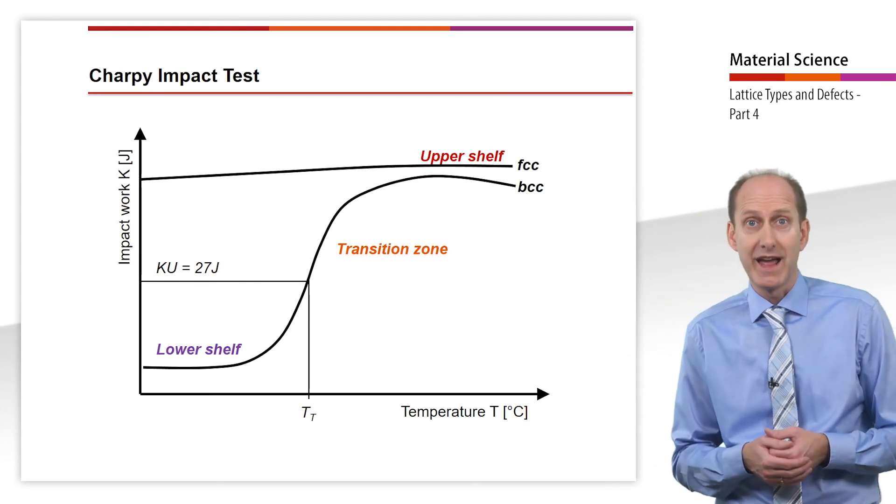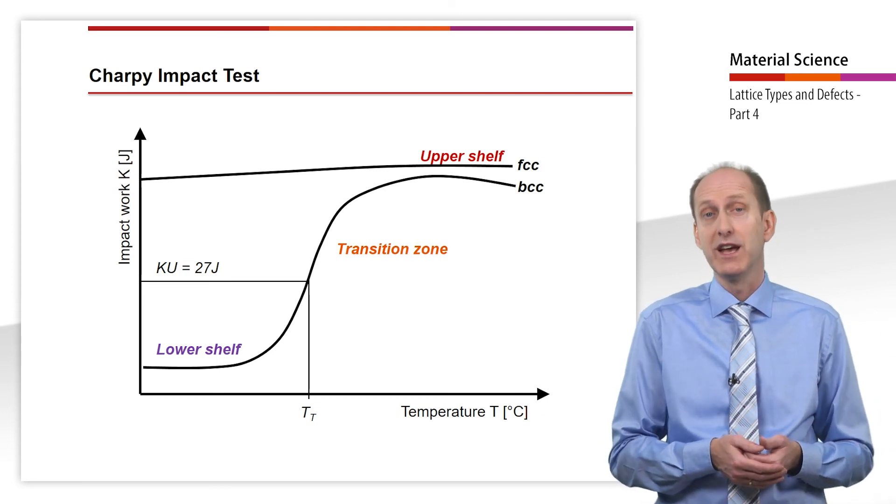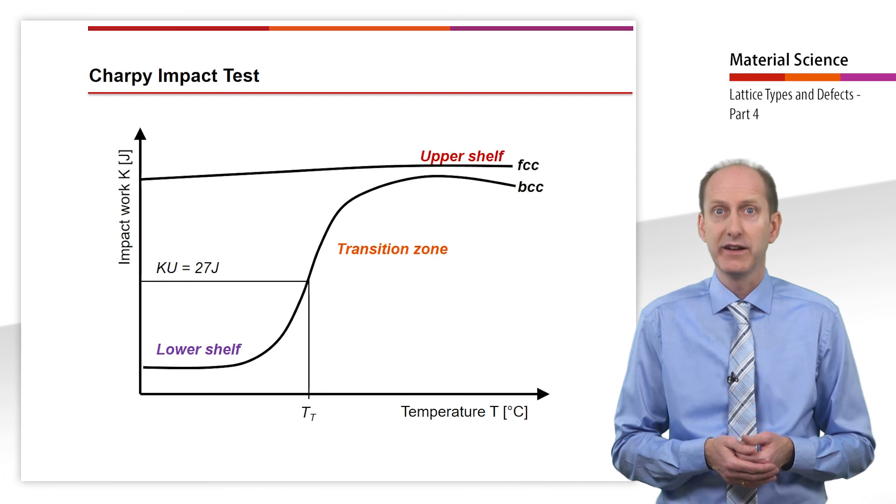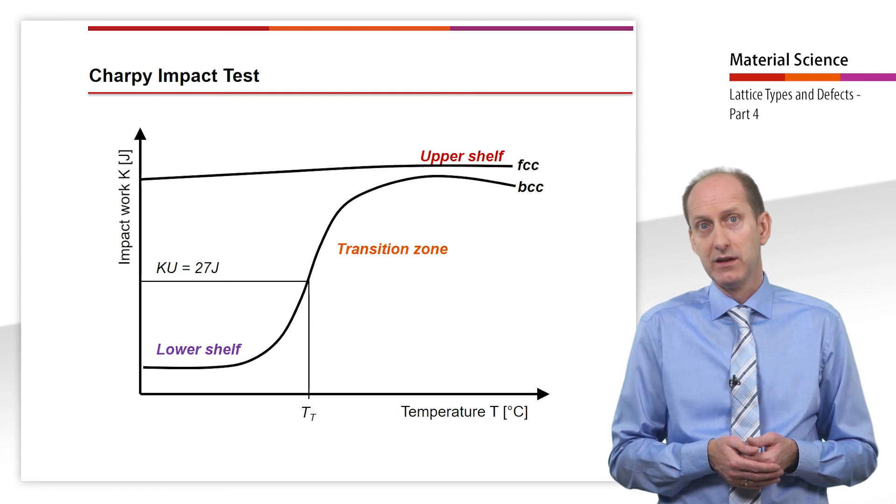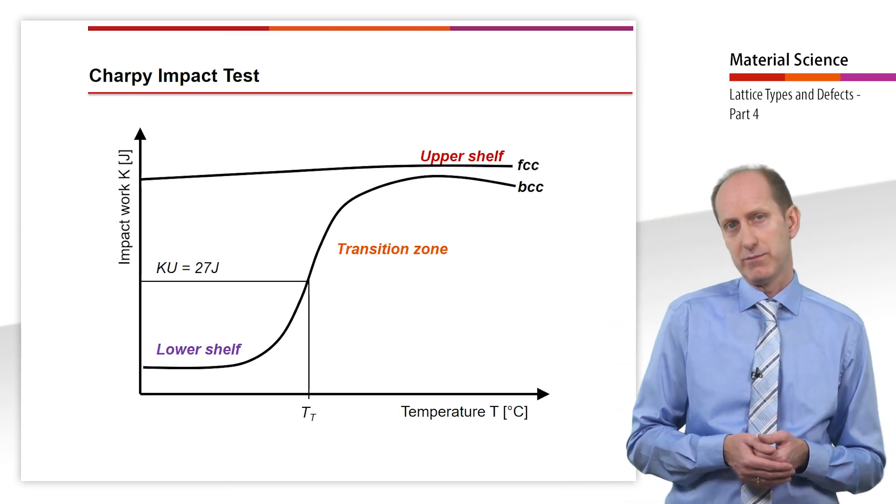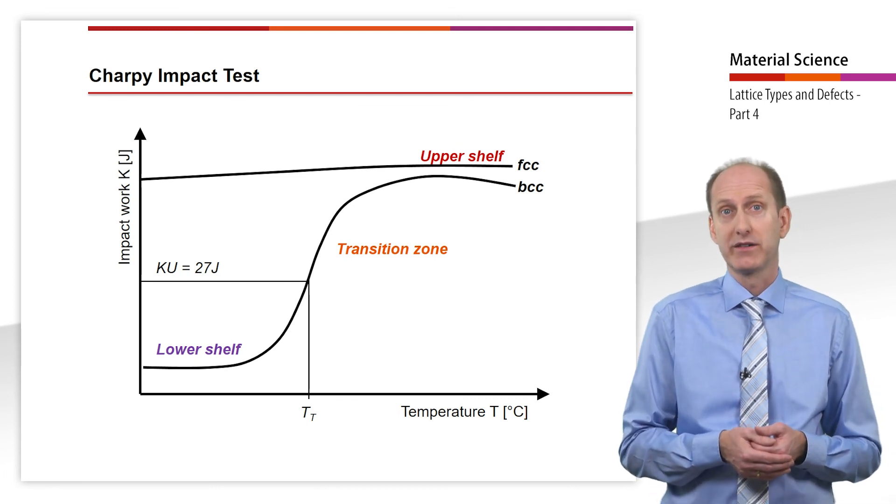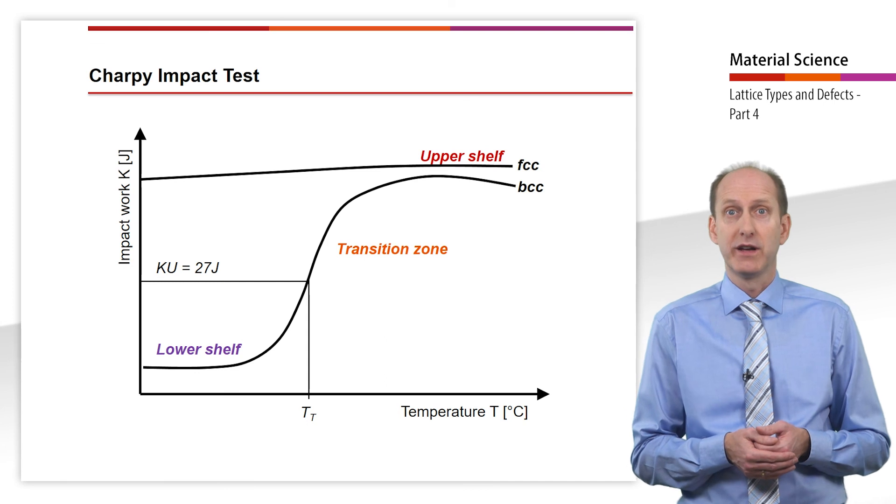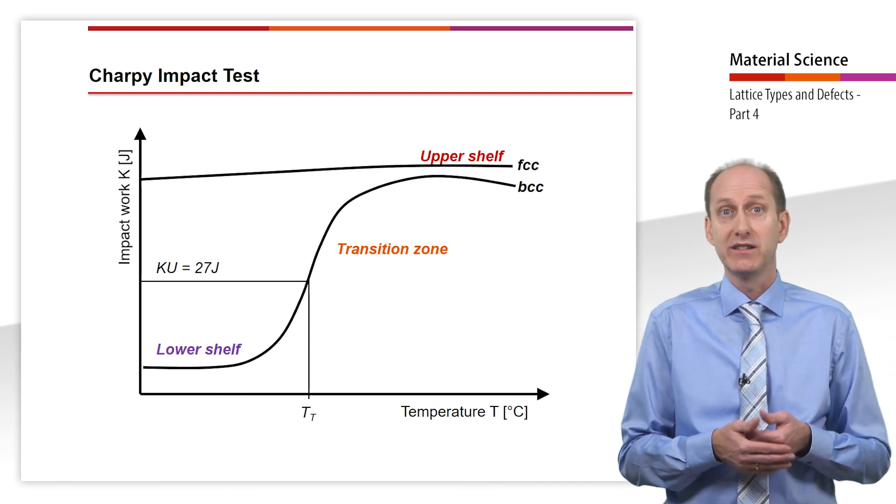As you have learned in the last video, the difference between face-centered cubic metals and body-centered cubic metals exhibits itself especially in temperature-dependent impact stress. The resistance to slip increases sharply with decreasing temperature, especially in metals that don't have close-packed slip planes.